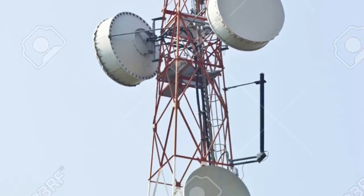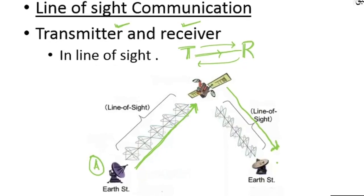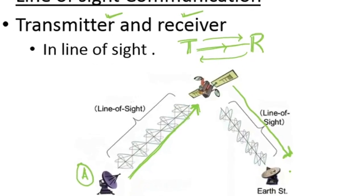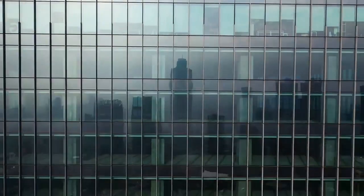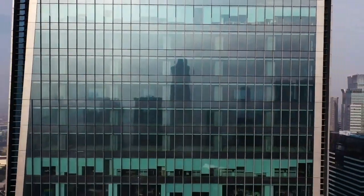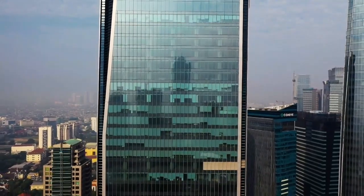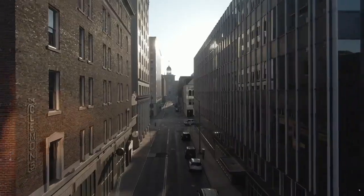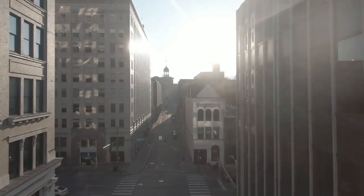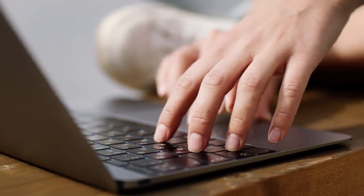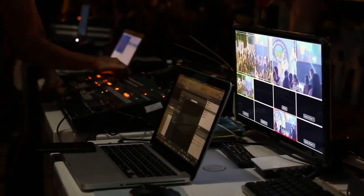FSO communication is considered an alternative to radio relay link line-of-sight (LOS) communication systems. Enterprise connectivity is one of the major use cases of the technology. The ease with which FSO links can be installed makes them a natural fit for interconnecting local area network segments housed in buildings separated by public streets or other right-of-way property.